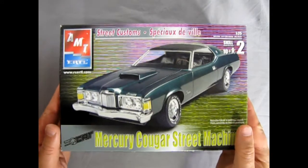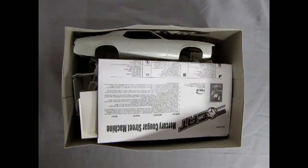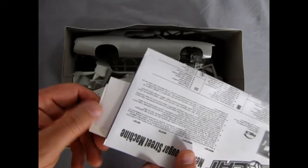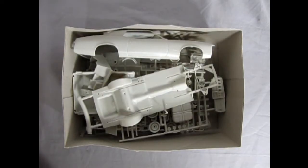If we remove the lid on this wonderful machine you can see all the great details inside the box like our Mercury Cougar instructions with our decals sticking out. We can take a look at that toward the end of the video.